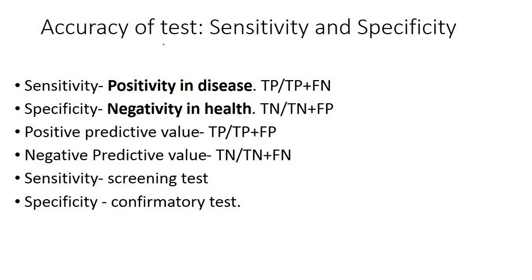Next is the screening chapter. For sensitivity and specificity, we have many confusions with formulas. It is better to remember the phrase: sensitivity is defined by 'positivity in disease' — the ability of the test to detect true positives among the diseased. Specificity is defined by 'negativity in health' — the ability of the test to truly detect negatives among healthy people.